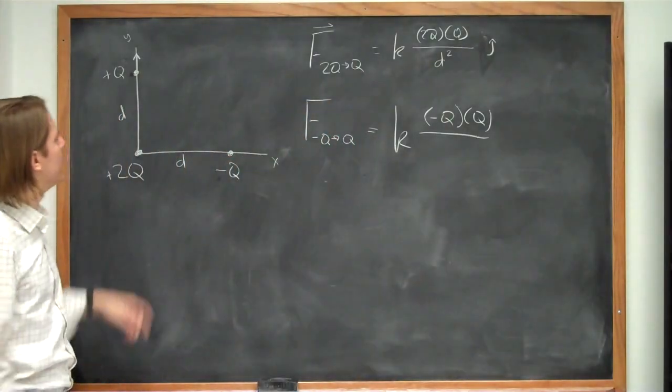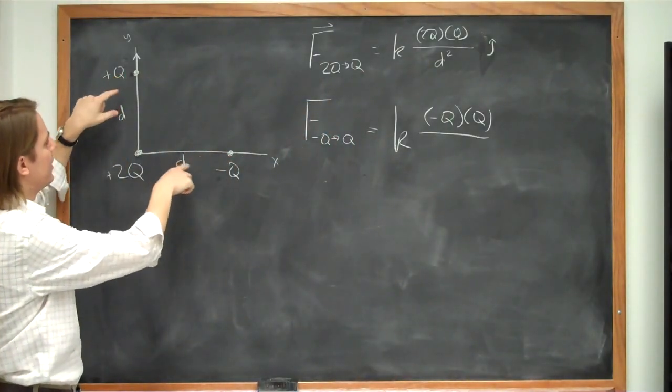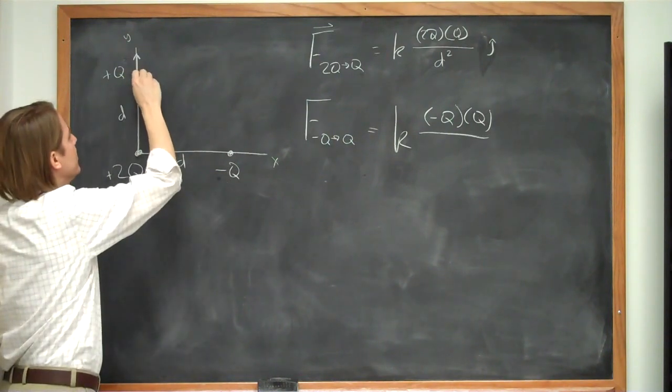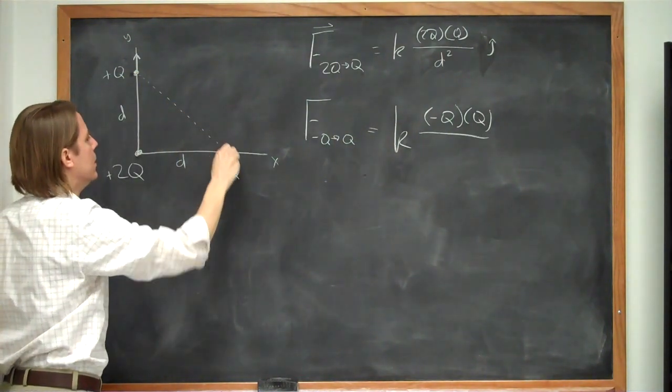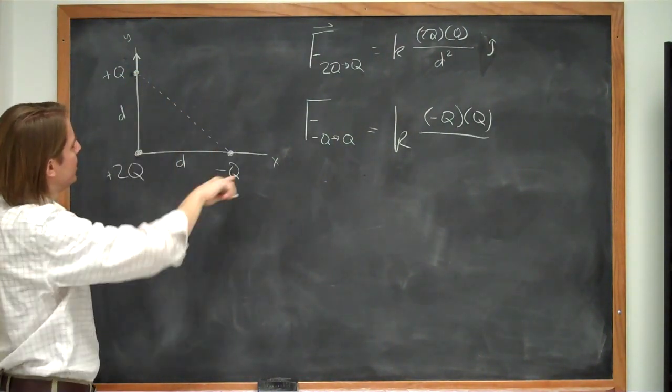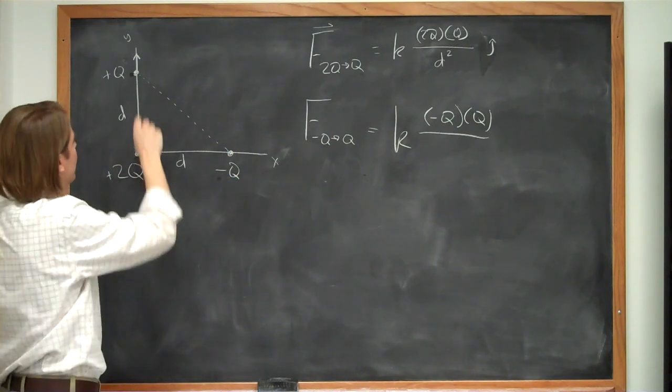And the separation now is different, right? It's not d and it's not d here. It's whatever this distance is. So it's a Coulomb's law problem going across the plane here. So we know this is a right triangle.